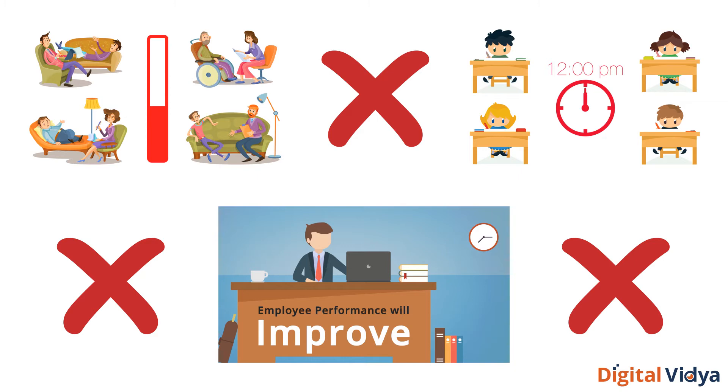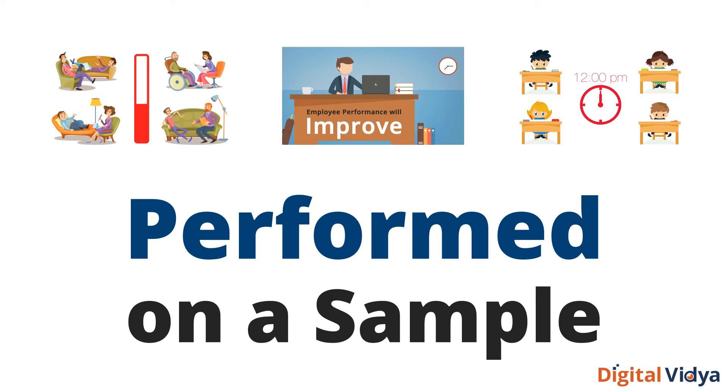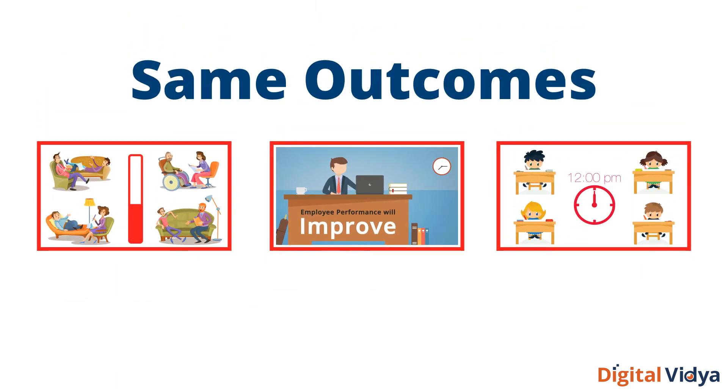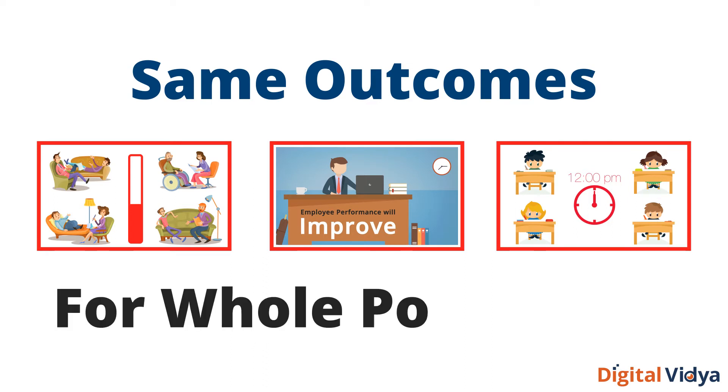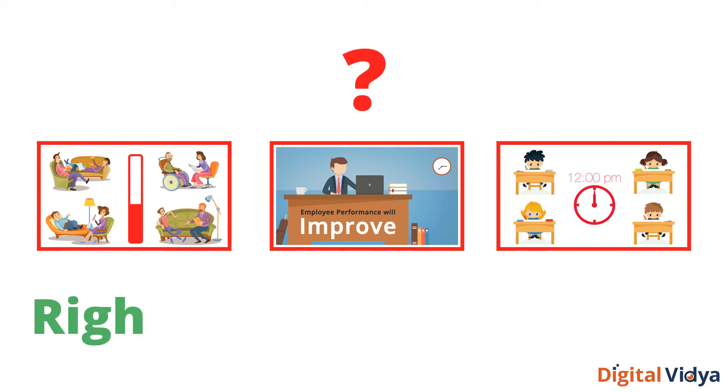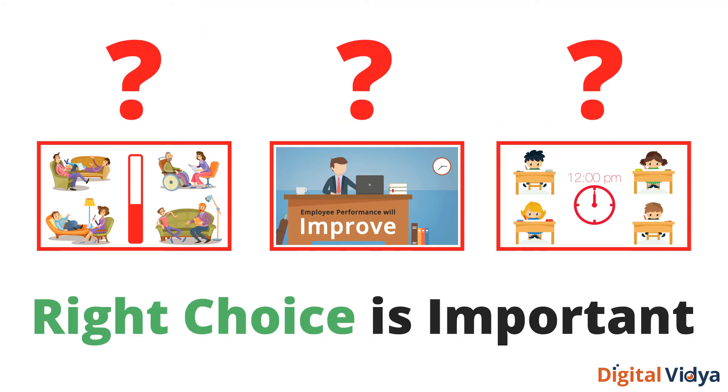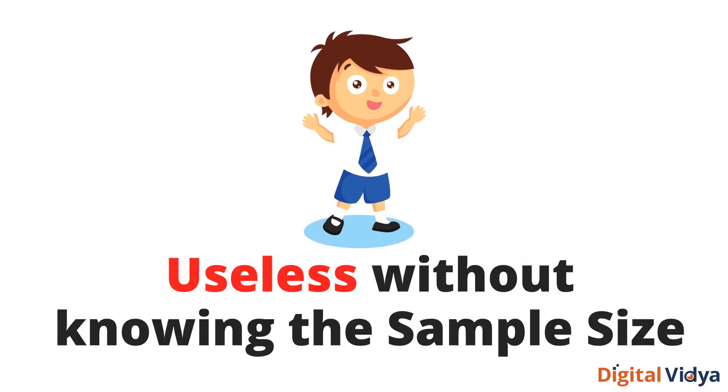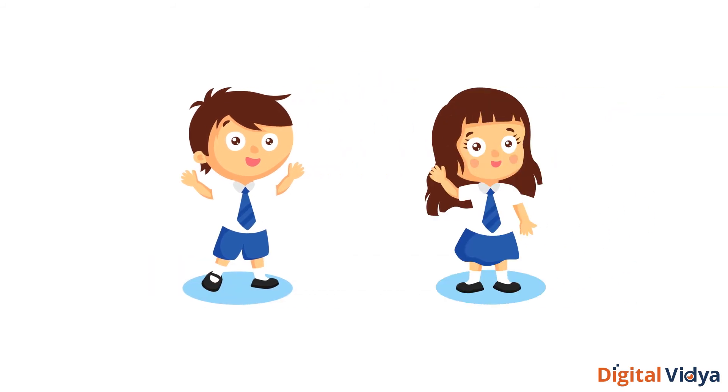Also, these experiments are performed on a sample. So these tests can also determine that the outcomes on the sample will also be the same for the whole population. Choosing the correct sample is important for these experiments. A statement such as Ravi came first in class is useless if the sample size is unknown or it loses its meaning if there were only three people in his class.